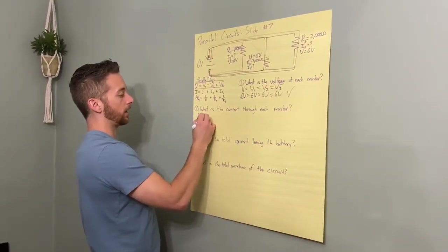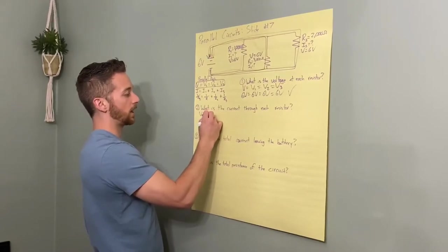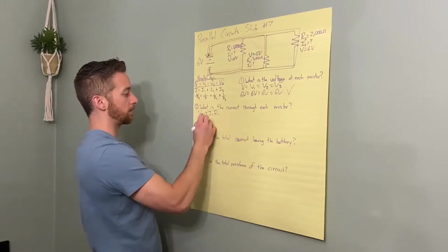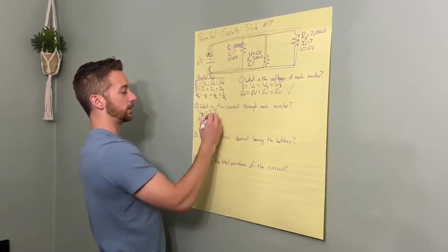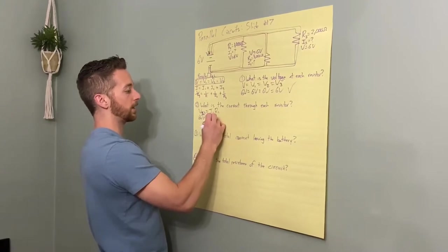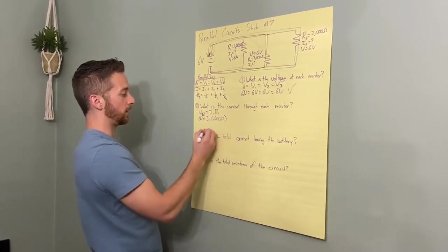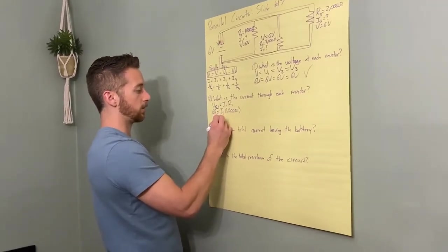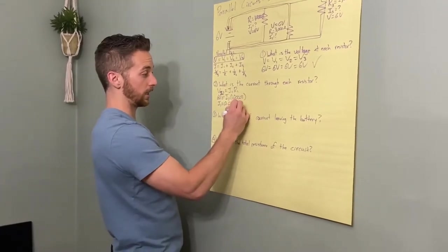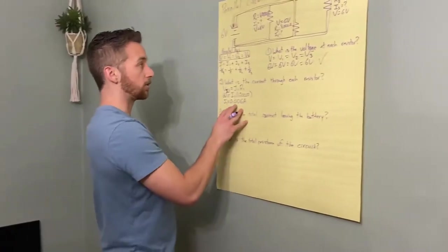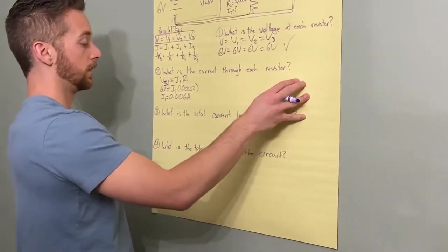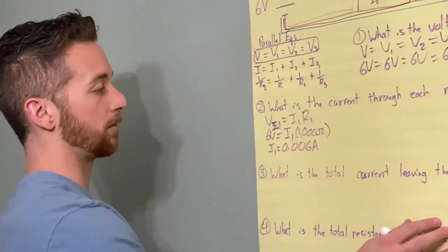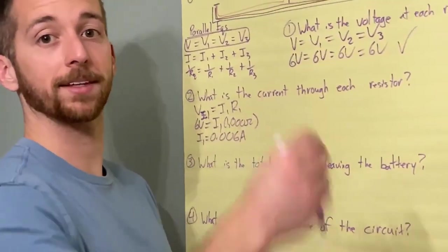V equals IR. V1 equals I1 times R1. So, V1, we got six volts. We're solving for I1. Now, the difference in each of these will be the resistance. It's 1,000 ohms. So, I do my division. Six divided by 1,000. I1 equals 0.006 amps. Is that right? Check it. Yes. We're going to just repeat this process. Plugging in these numbers. The six and 3,000 and the six and 2,000. Do your division. You should get other numbers. Maybe we'll play a little theme music on the snap.